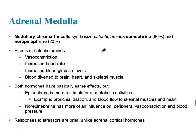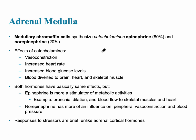The innermost part of the adrenal gland is the adrenal medulla, which is very important when there are large drops in blood pressure. For example, if a patient is losing a lot of blood via hemorrhage, this causes a decrease in blood pressure. The catecholamines released — 80% epinephrine and 20% norepinephrine — cause vasoconstriction, increased heart rate, and increased blood glucose levels. Additionally, ADH is also released, which reabsorbs water and returns it to the bloodstream.